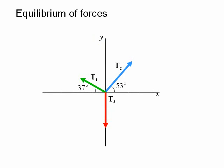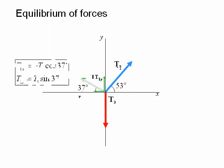Now we resolve each of the forces into its x and y components. T1x is equal to minus T1 cos 37 degrees. Notice the negative sign here because this component is directed along the negative x-axis. T1y is equal to minus T1 sin 37 degrees.